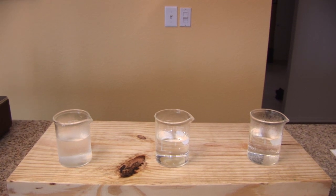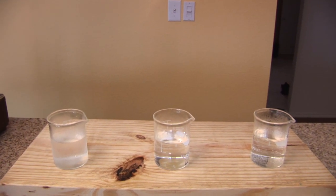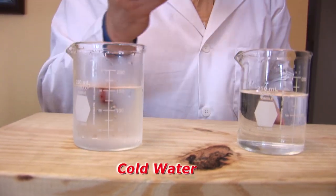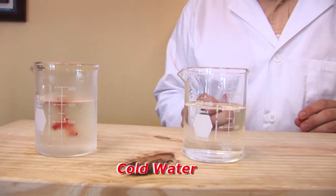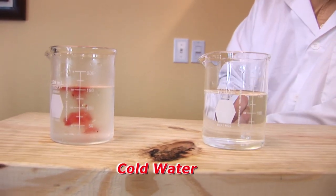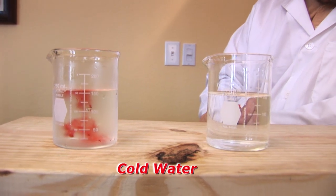We are going to use three identical beakers. Beaker 1 will hold very cold water. Then we will place food coloring in the beaker and observe what happens.